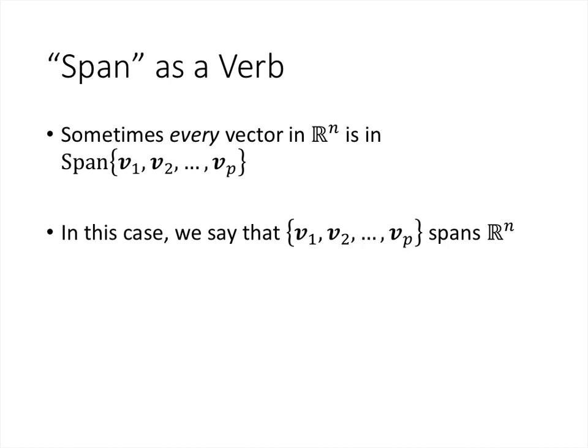Now sometimes it'll turn out that every vector in Rn is in the span of a particular set of vectors. It doesn't always happen, though the couple examples that we saw pictures of it didn't happen there, but it will sometimes happen that every single vector in Rn, every vector you could think of, is in the span. And so in this case we use the word span not as a noun but as a verb. We say that those vectors v1 through vp span Rn, or that set of vectors spans Rn. And sometimes we'll add the words all of, just to emphasize that everything in Rn can be written as one of those linear combinations.